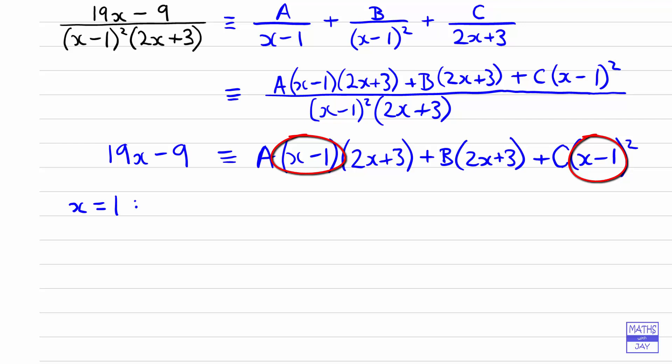A will be multiplied by 0 because x minus 1 is 0. And then we've got B multiplying 2 times 1 plus 3. And then C will also be multiplied by 0. So we can see that we've very easily found what B is. So we've got 19 minus 9 is 10. B is B multiplied by 5. So we've found already B. B is 2.